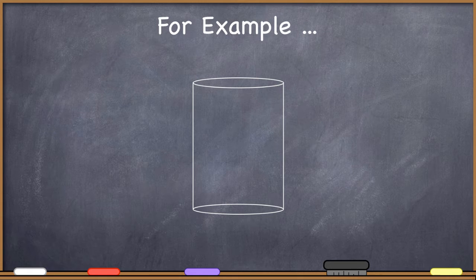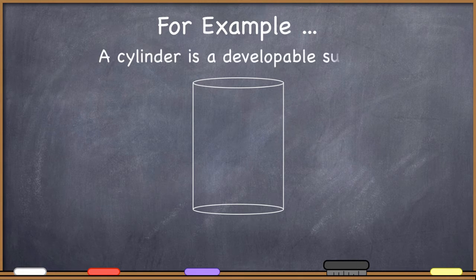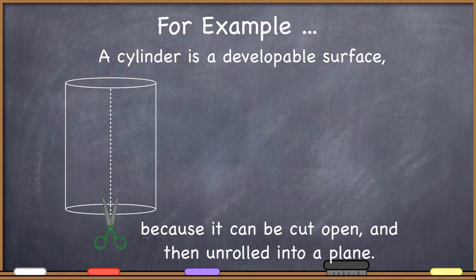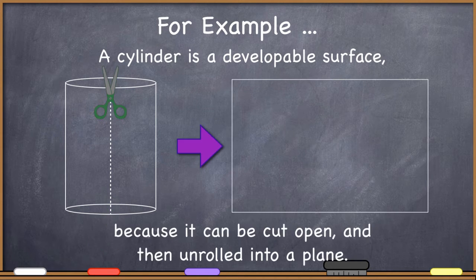For example, this cylinder here is a developable surface because if I were to take a cylinder and cut it straight up the side, I could unroll that into a plane. So a cylinder is a developable surface because with this simple cut I can transform this cylinder into a plane.